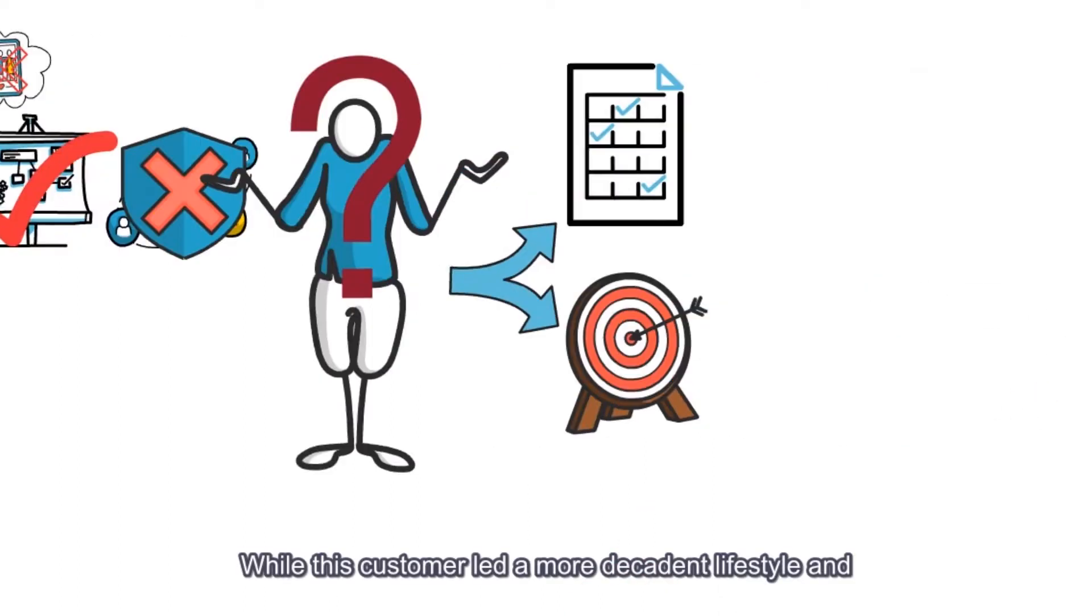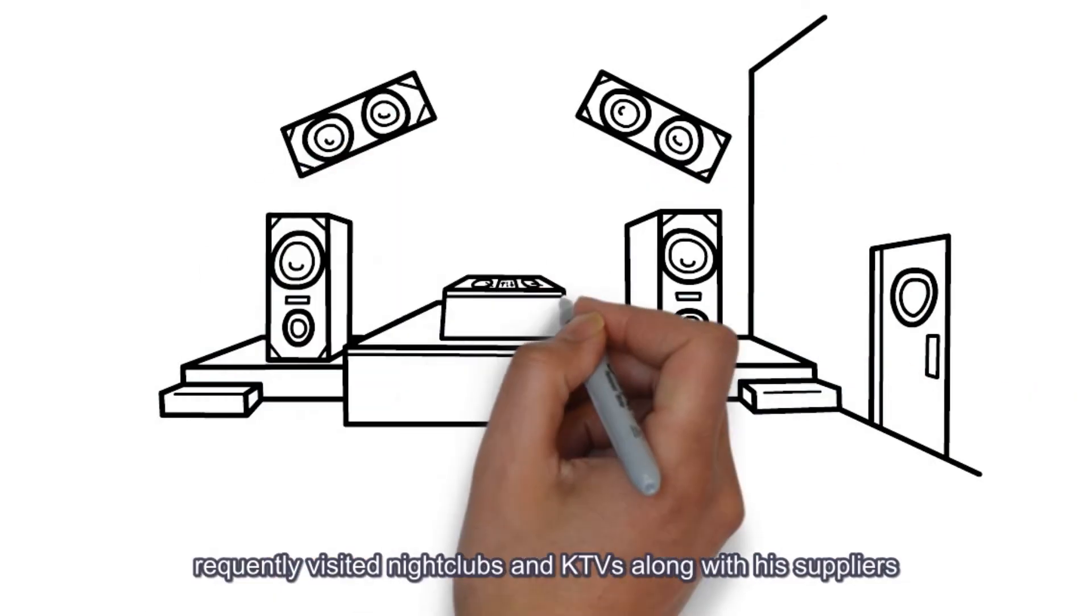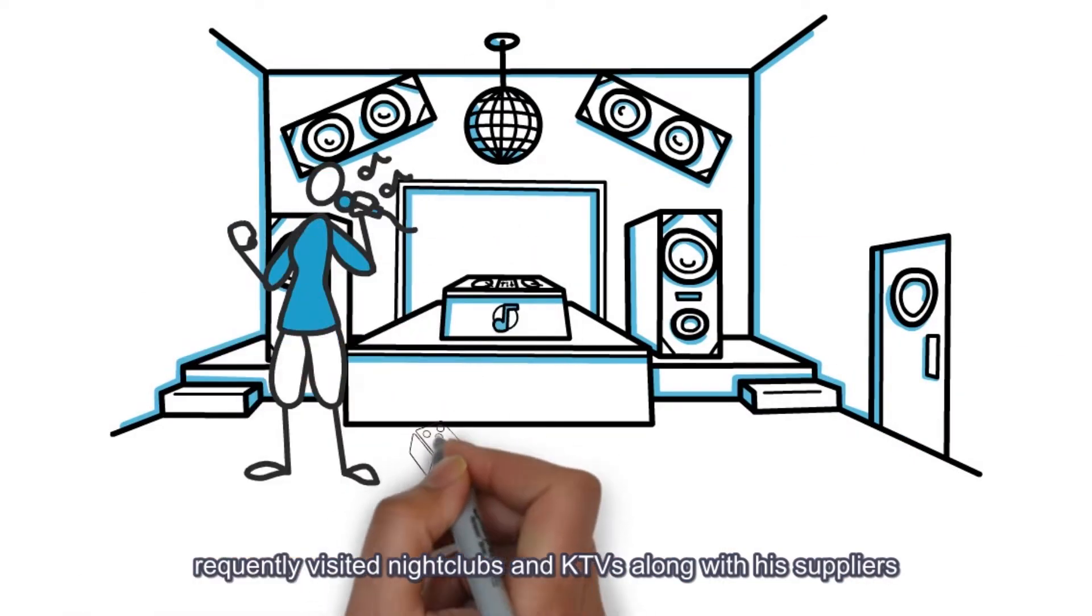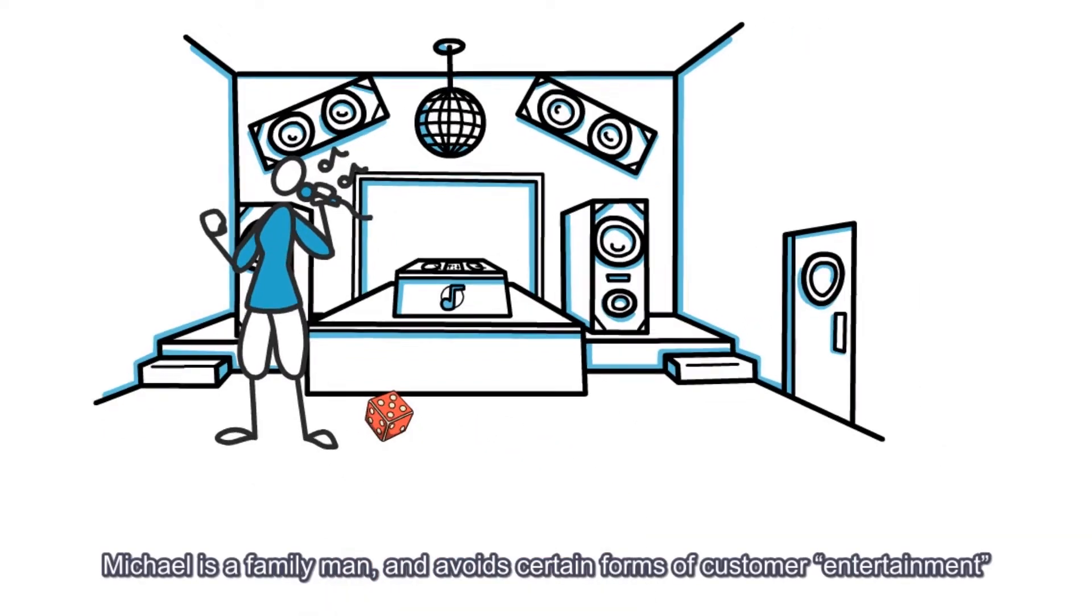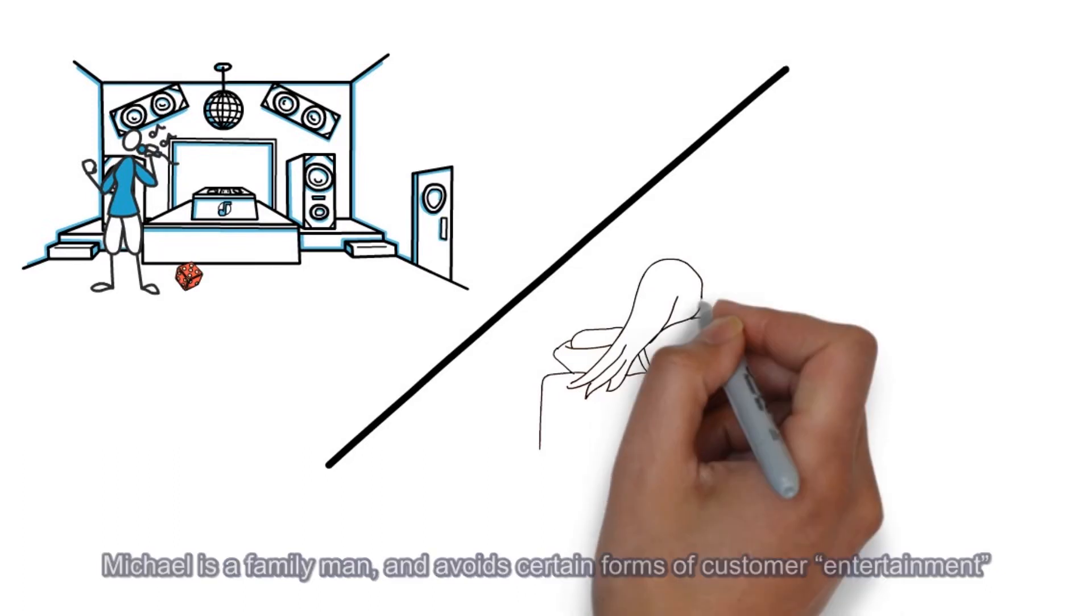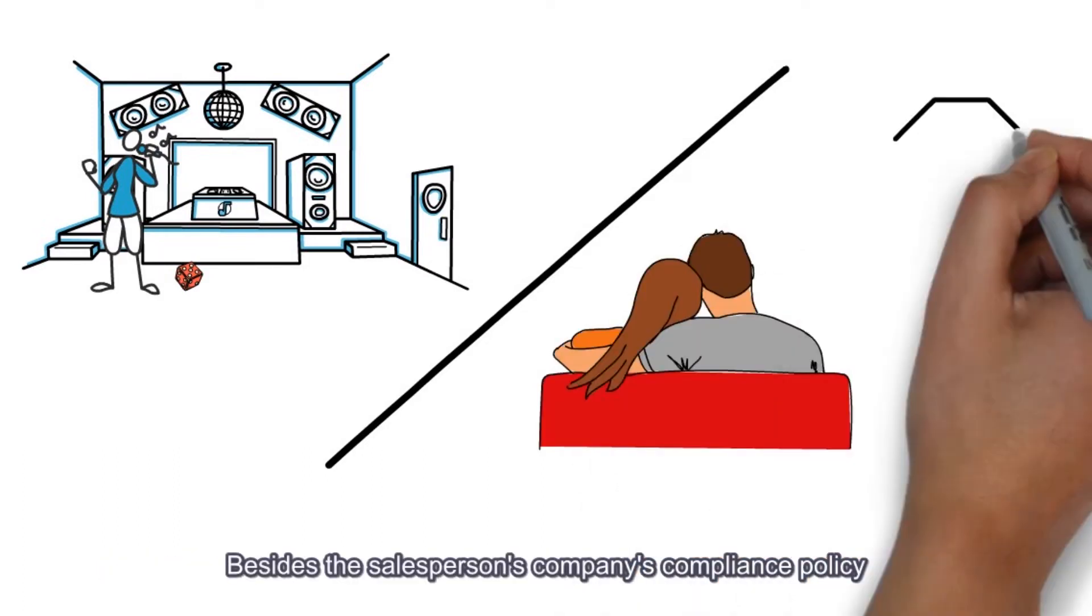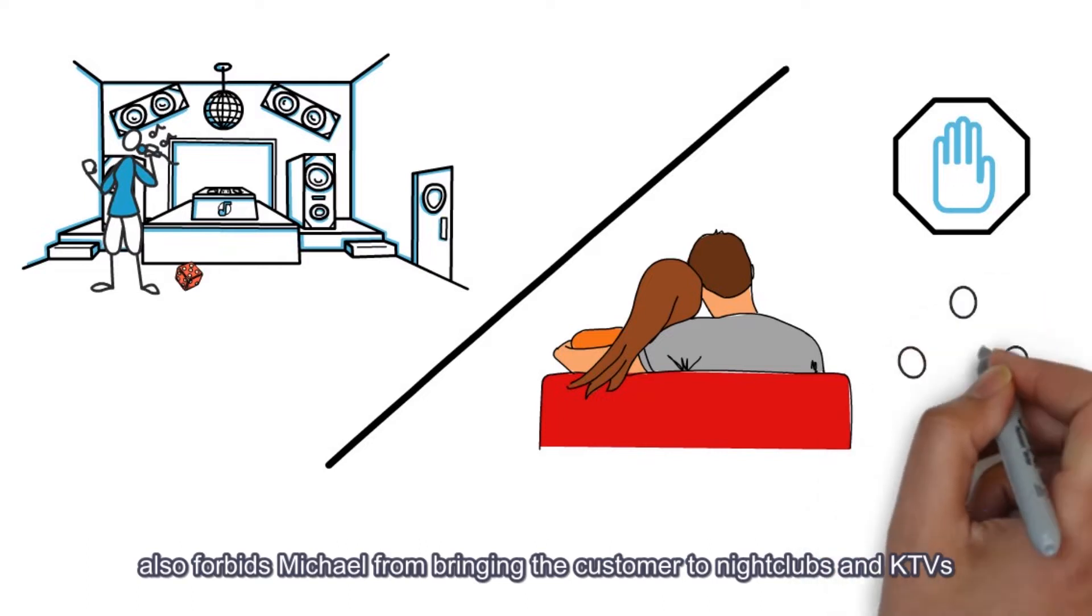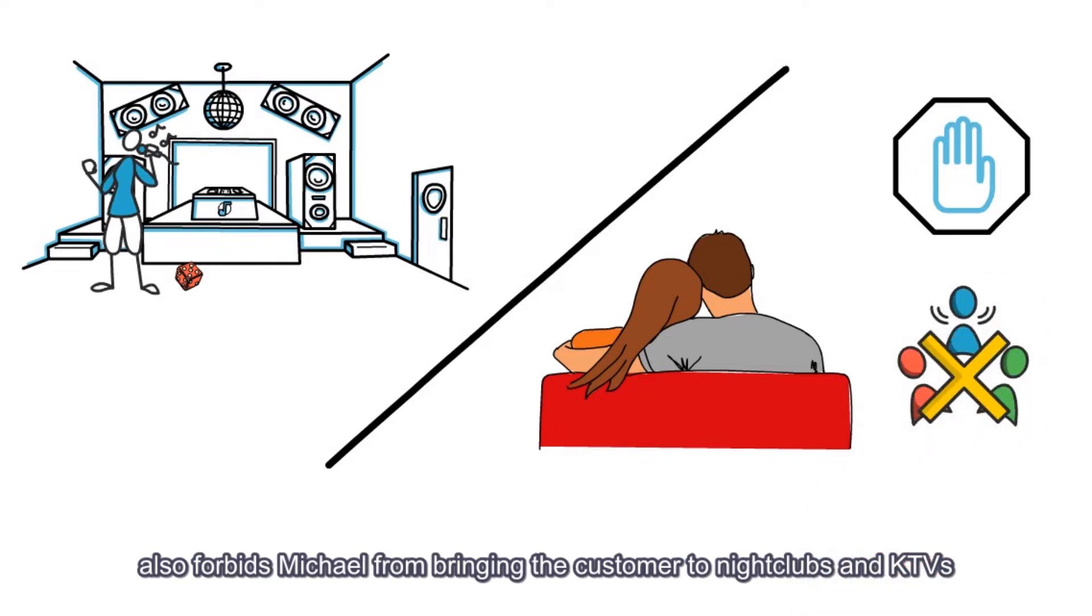While the customer led a more decadent lifestyle and frequently visited nightclubs and KTVs along with his suppliers, Michael is a family man and avoids certain forms of customer entertainment. Besides, the salesperson's company's compliance policies also forbid Michael from bringing the customer to nightclubs and KTVs.